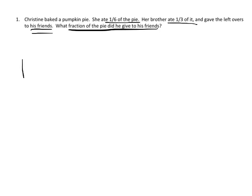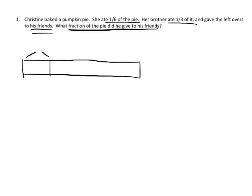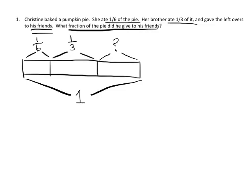We're going to draw a single tape diagram representing the whole pie. Without worrying about making sizes proportional, we'll say Christine ate a sixth and her brother ate a third. If you're a teacher, it's fun to ask students: what's bigger, one-sixth or one-third? Watch them struggle with that. The rest goes to his friends, marked with a question mark, and the whole thing counts as one whole pumpkin pie.